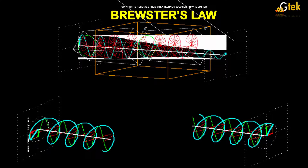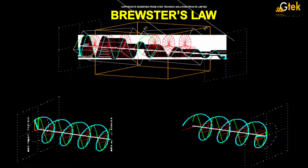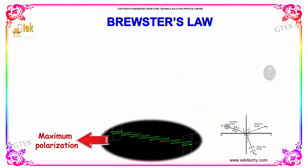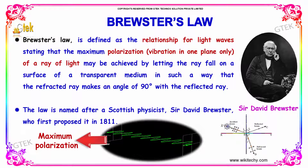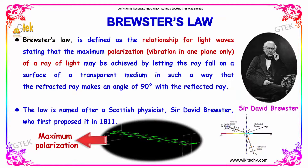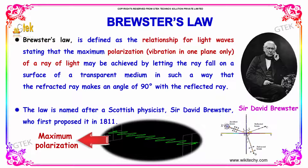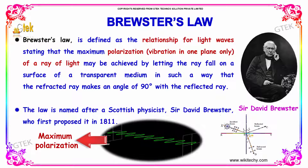Brewster's law is defined as the relationship for light waves. Maximum polarization of a ray of light may be achieved by letting the ray fall on a surface of a transparent medium in such a way that the reflected ray and refracted ray make an angle of 90 degrees.